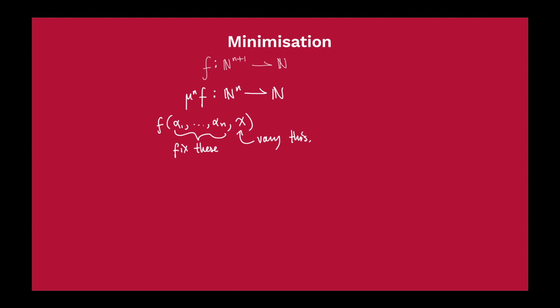Minimization looks at all the different variations of this. We try α₁ up to αₙ with 0 in the final place, giving us output y₀. Then we try with 1, giving us y₁, and so on. Minimization looks for the first x where the output goes to 0.